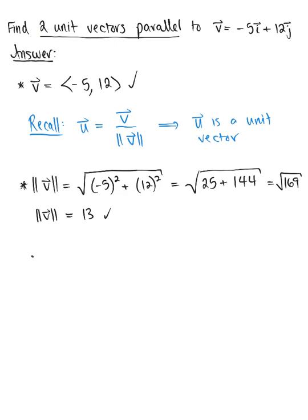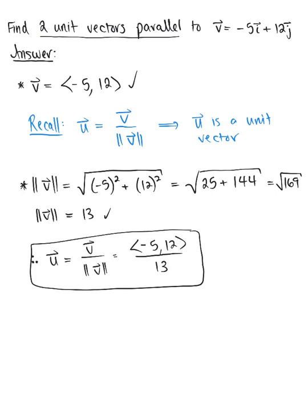Therefore, one unit vector in the direction of v would be this given vector <-5, 12> divided by the magnitude 13, giving us <-5, 12>/13. This is one unit vector parallel to v.